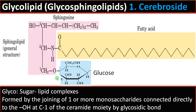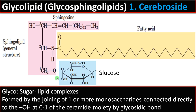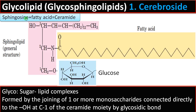If glucose is bonded to the OH by a glycosidic bond, then it is called cerebroside — an example of a glycolipid. So cerebroside is formed by the joining of one or more monosaccharides connected directly to the OH at the C1 position of ceramide or the sphingosine backbone by a glycosidic bond. Sphingosine and fatty acid together are called ceramide.